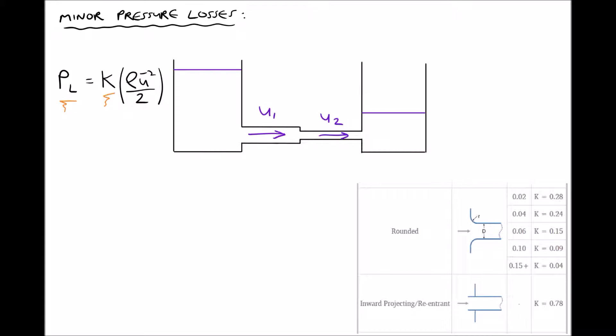If we use as an example water, we know that water has a density of a thousand kilograms per meter cubed. Providing we knew the velocity either side of the feature we could work out ū bar because ū bar the mean average velocity would just be the average between u1 and u2, so u1 plus u2 over 2 gives us ū bar.